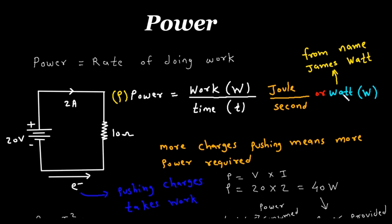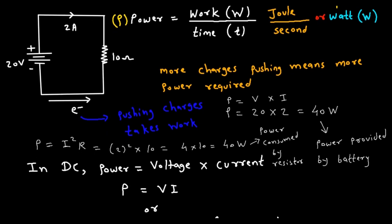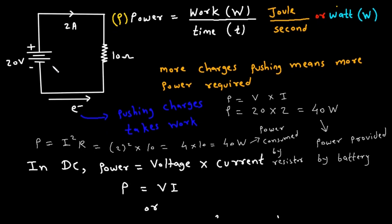This Watt comes from a person's name — the inventor's name, James Watt. So power is the ratio of work upon time, and its unit is Joule per second or Watt.